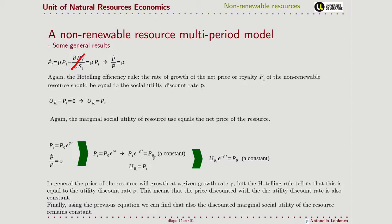If we consider that marginal utility is also equal to price, we can substitute accordingly and state that it is also the discounted value of the marginal utility that must remain constant.